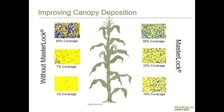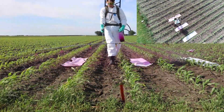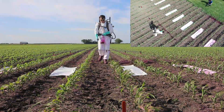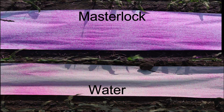The next thing we have to look at is what type of adjuvants we need to use with the application. Coverage is extremely important in a fungicide application. I always recommend having a drift and deposition product like Masterlock in the tank to get better canopy penetration. This demonstration done with red dye shows the importance of having a drift and deposition aid in the tank. As you can see, the tank that had the Masterlock in it got better canopy penetration and better coverage on this sheet of paper.